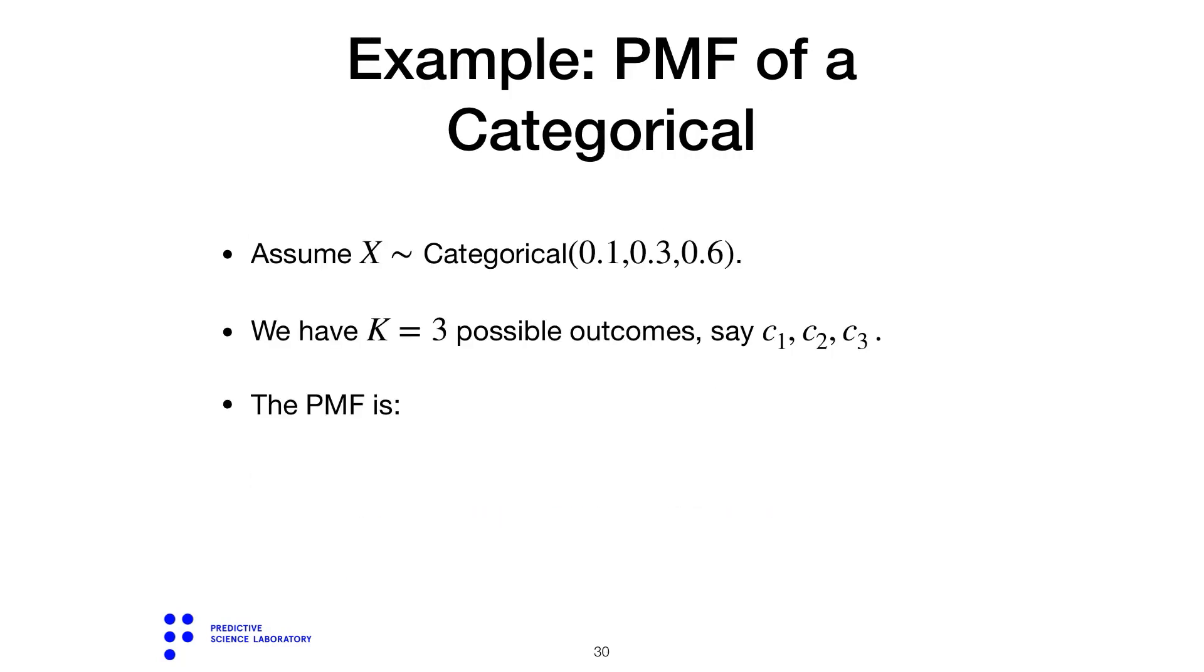Let's take this specific categorical random variable that has three labels. The first label occurs with probability 0.1, the second one with probability 0.3, and the final one with probability 0.6. Of course, the probabilities must sum to one, and they indeed do.